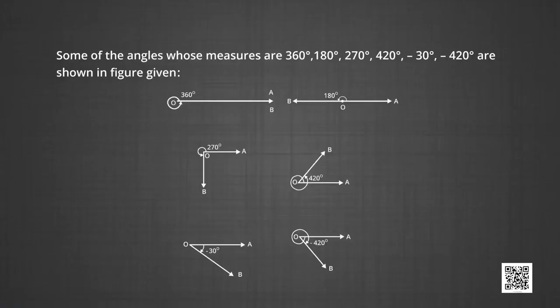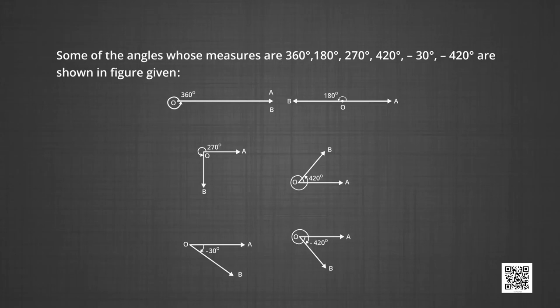Let us see how some of the angles look. Some of the angles whose measures are 360 degrees, 180 degrees, 270 degrees, 420 degrees, minus 30 degrees which is moving in the clockwise direction, and minus 420 degrees which is moving in the clockwise direction — one complete circle and then another 60 degrees in the clockwise direction.